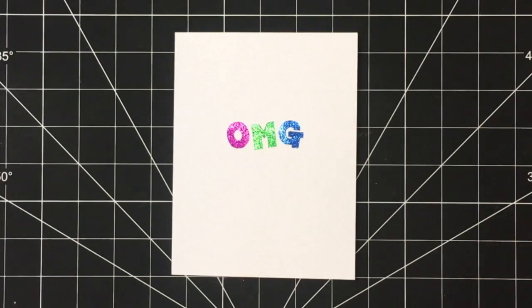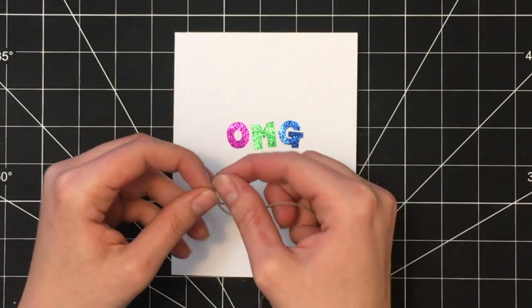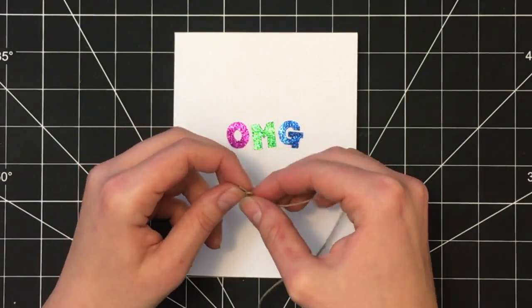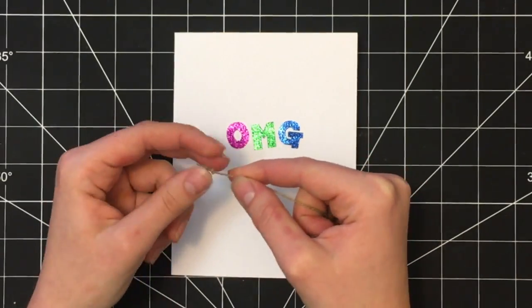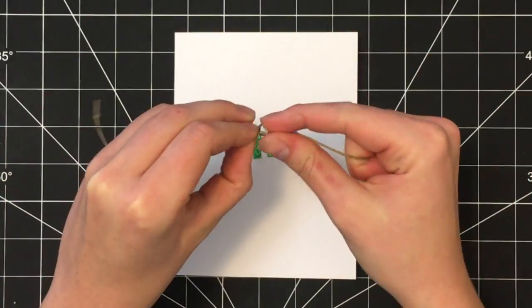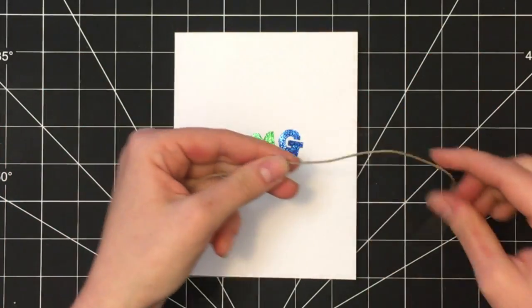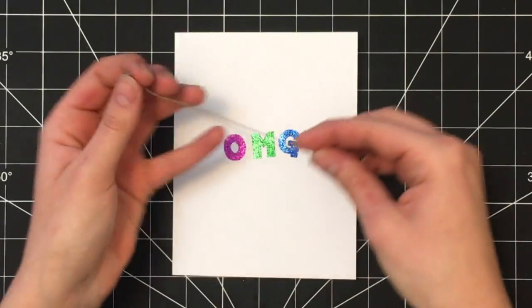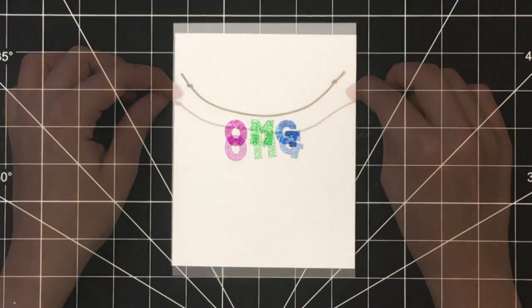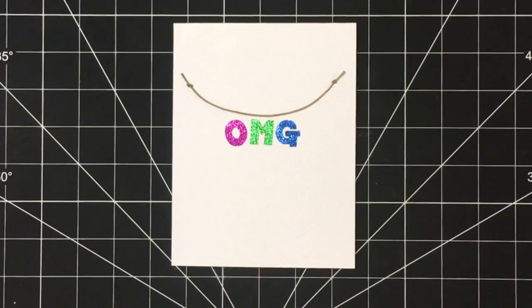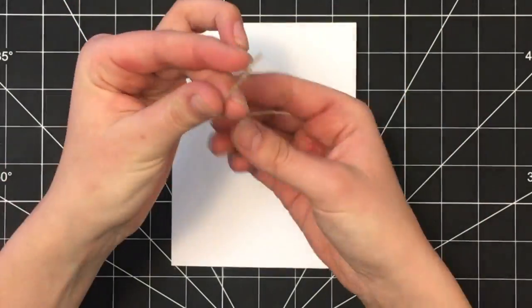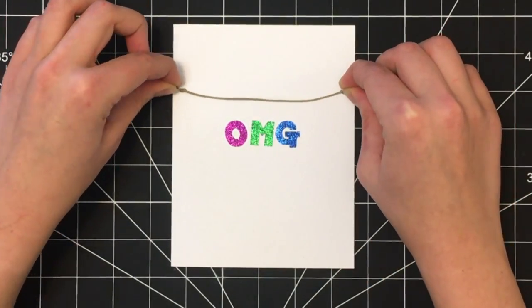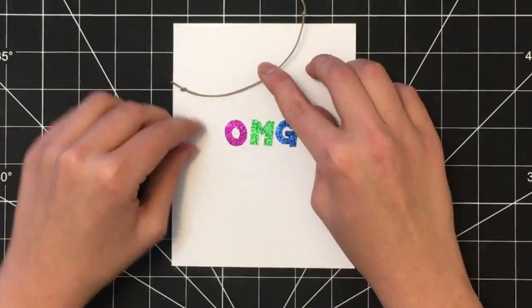Next I created the twine that these O, M, and G letters are hanging on. Simply take a piece and tie a knot at one end, and then string it across the card to get an appropriate length, and then tie a knot at the other end and trim off any excess. Once you have the length you desire, so it has a bit of a loop to simulate that these letters are hanging on it, simply take your glue and glue that onto the card.